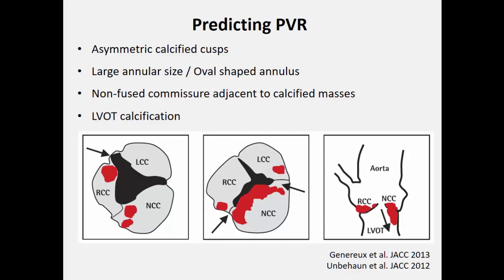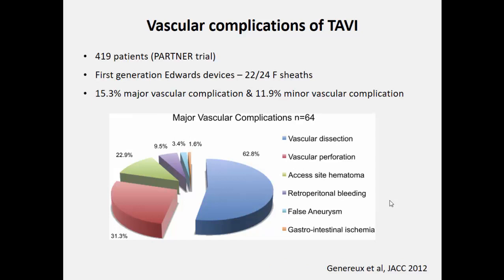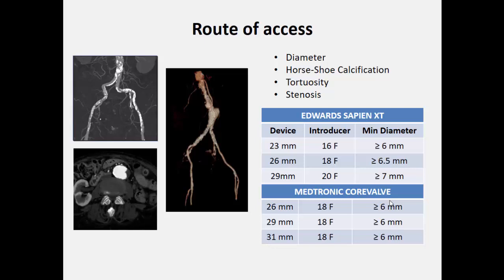Calcification in the annulus is one of the main causes of paravalvular leak, as the valve cannot be fully expanded along the areas of calcification. Vascular access complications are another important concern with TAVI procedures, with a reported rate of approximately 15–20%, including vascular dissection, perforation, access-site hematoma, retroperitoneal bleeding, and false aneurysms.